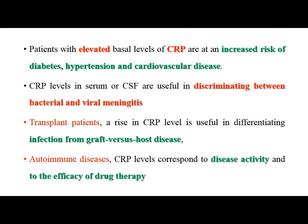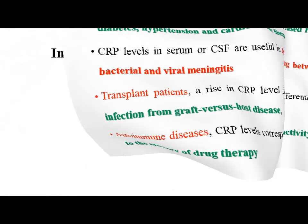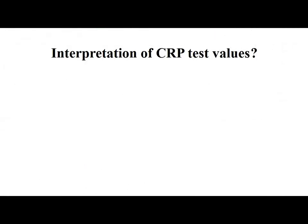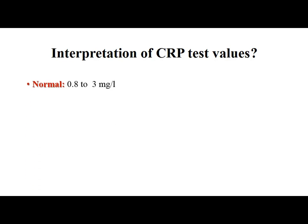In autoimmune disorders, CRP levels correspond to the disease activity and reflect the efficacy of drug therapy. Regarding interpretation of CRP test values: the normal range is 0.8 to 3 mg per litre. Anything between 3 and 10 mg per litre is considered moderate, and any value beyond 10 mg per litre suggests an ongoing inflammation.